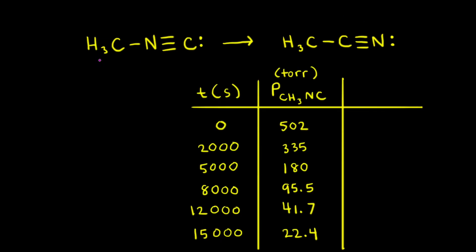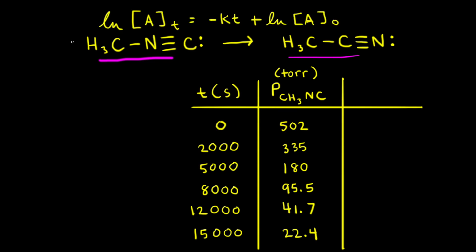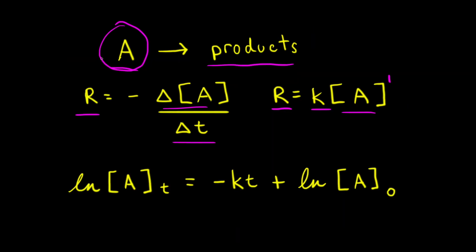The conversion of methyl isonitrile to acetonitrile is a first-order reaction, and these two molecules are isomers of each other. Let's use the data provided in this data table to show that this conversion is a first-order reaction. Since the coefficient in front of methyl isonitrile is 1, we can use this form of the integrated rate law where the slope is equal to the negative of the rate constant k.